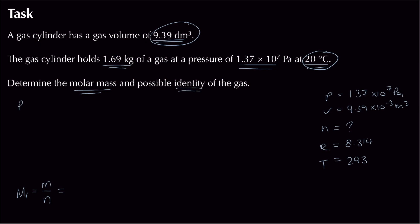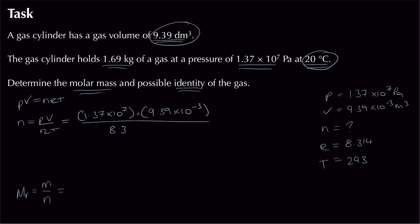With values ready, rearrange PV = nRT to n = PV/RT and substitute: (1.37 × 10⁷ × 9.39 × 10⁻³) / (8.314 × 293). Putting that in the calculator gives a large answer of 52.8 moles — which makes sense given that the mass is in kilograms, not grams.